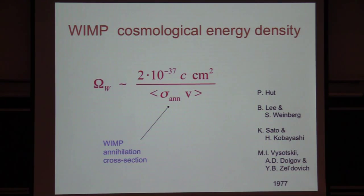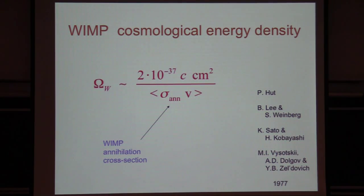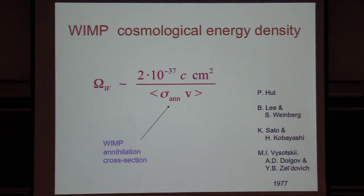You can calculate the density today, Omega, in terms of just the annihilation cross section: as the cross section goes up, the density goes down. And if the annihilation cross section is of order the weak scale, you get more or less the correct WIMP density today — referred to as the WIMP miracle. Alternatively, taking the Planck scale (~10^19 GeV) and the energy density today, their geometric mean gives roughly a TeV — the electroweak scale — which is basically the same relationship.